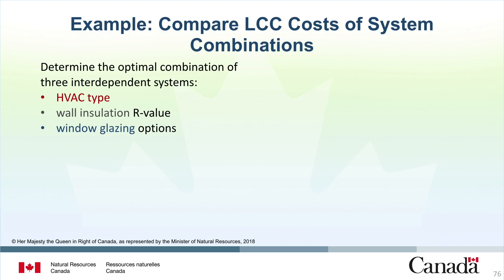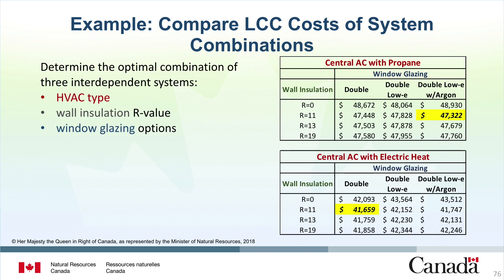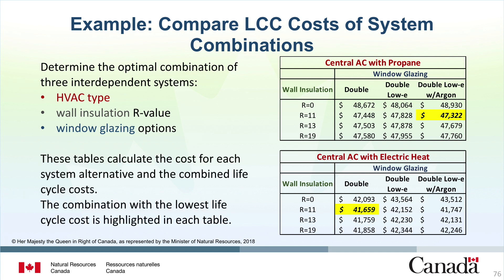Here is the equation representing the general rule for simultaneous optimization. This formula can be used to find the best combination of all options, representing the large number of combinations required to find the lowest overall lifecycle cost. I stands for the system combination, S for the building system or baseline, and J for the alternative system. For a particular system combination I, sum the present value costs for all N systems, where present value costs equal investment costs plus replacement costs minus residual value plus OM&R costs plus energy costs for that particular system combination. In the following example, we will determine the optimal combination of three interdependent systems: HVAC type, wall insulation R value, and window glazing options.